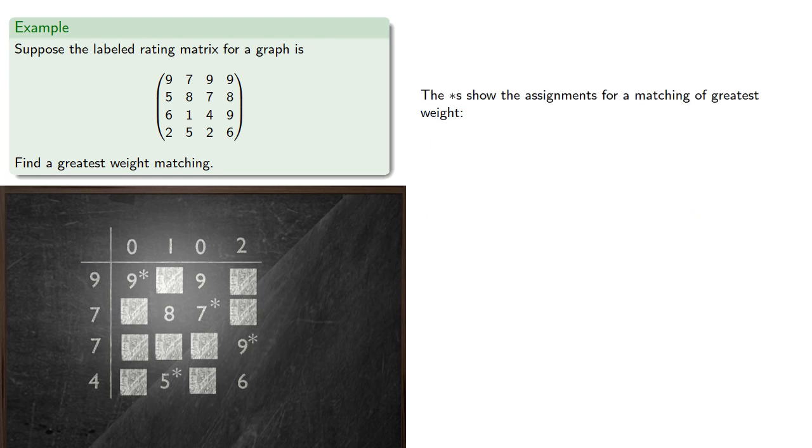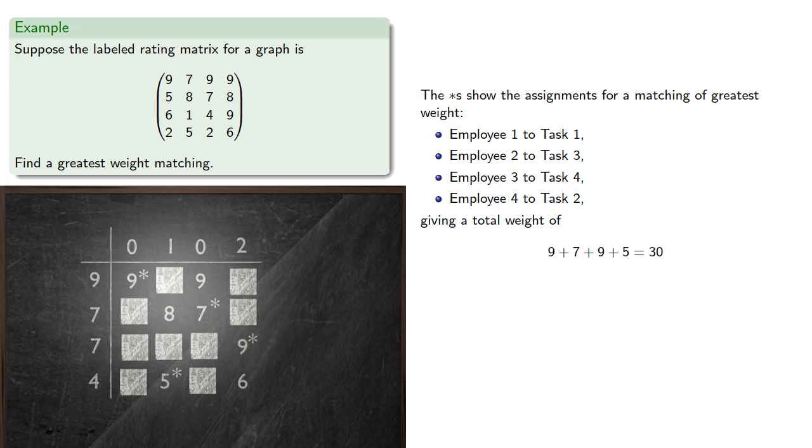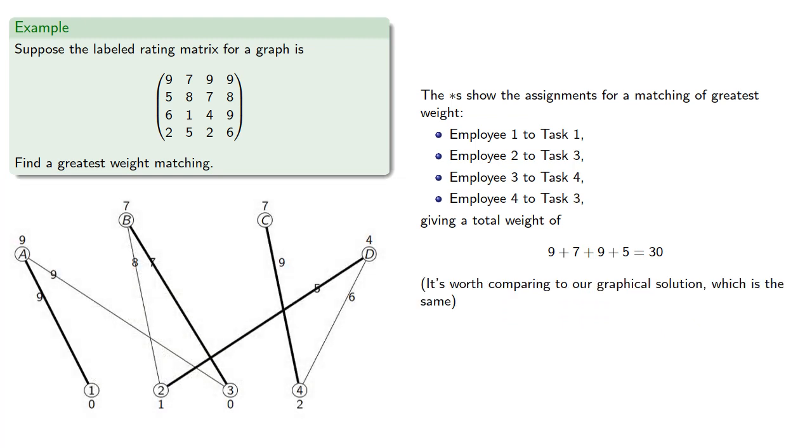The stars show the assignments for a matching of greatest weight. Employee 1 to task 1, employee 2 to task 3, employee 3 to task 4, and employee 4 to task 2, giving a total weight of 30. And it's worth comparing to our graphical solution, which is the same.